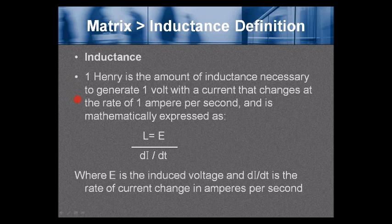Matrix inductance definition: one henry is the amount of inductance necessary to generate one volt with a current that changes at the rate of one amp per second. This is mathematically expressed as shown on screen, where E is the induced voltage and di/dt is the rate of current change in amperes per second.